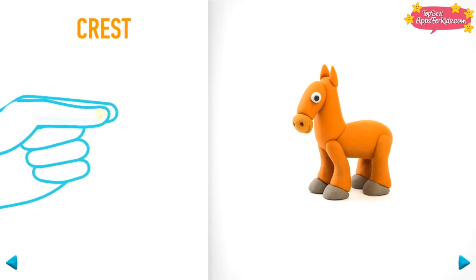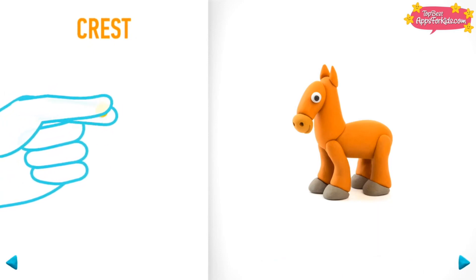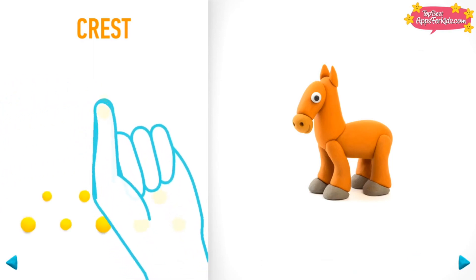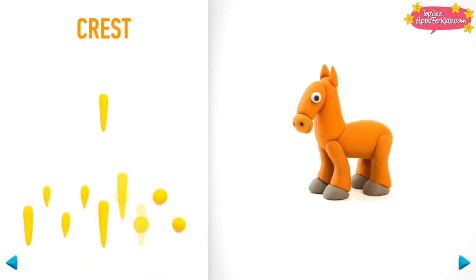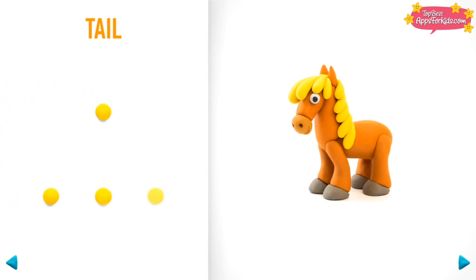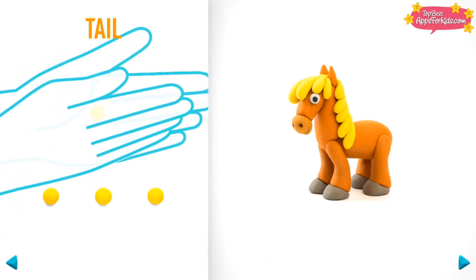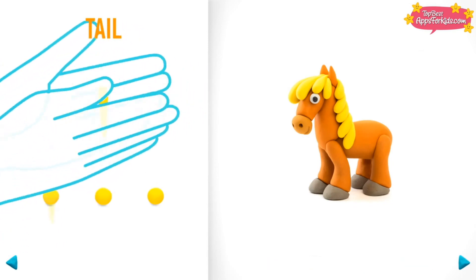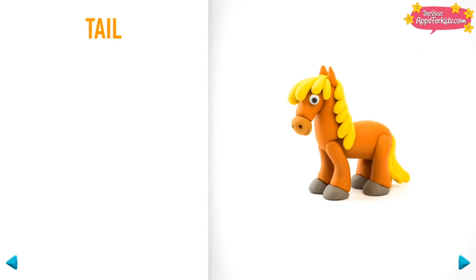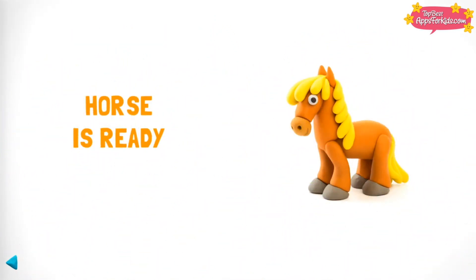It's time to model a crest. Take a piece of yellow clay and roll ten little balls, then roll them into a cone with your fingers. Now make a tail. Take a piece of yellow clay and roll four little balls, then roll into a cone with your hands. The tail is done! Congratulations — now your horse is fully done!